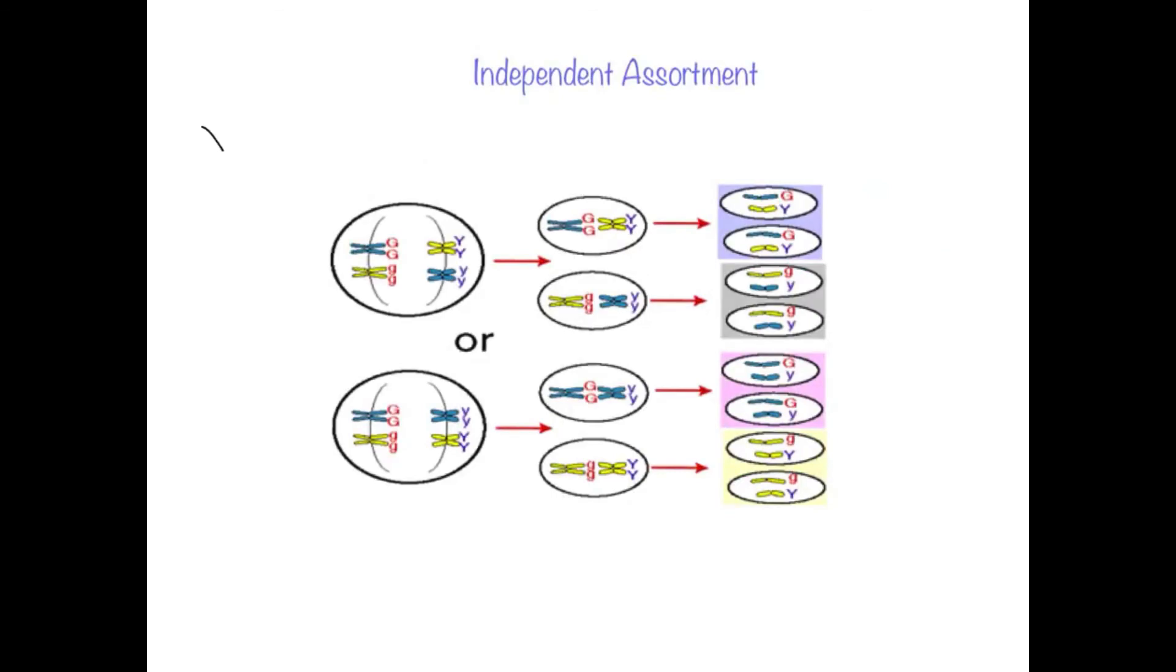The last thing we need to look at is independent assortment, which takes place during metaphase 1. We can see here in our top image that we have four sets of chromosomes, and we've got big G, big G, little g, little g, big Y, big Y, and little y, little y. As we can see in the first picture, our dominant alleles, or the chromosomes carrying the dominant alleles have lined up on the top, and the chromosomes carrying our recessive alleles have lined up along the bottom. This means that our resulting daughter cells will contain the alleles from the top or the alleles from the bottom. They will either have the two dominant alleles or the two recessive alleles.